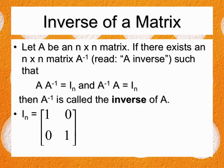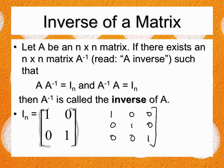There's more than one way to find an inverse — I'll teach you both. Let A be an n×n matrix. If there exists an n×n matrix A⁻¹ such that A times A⁻¹ equals Iₙ — the identity matrix — then they are inverses. So if I multiply two matrices together and get the identity matrix, those two matrices are inverses of each other.